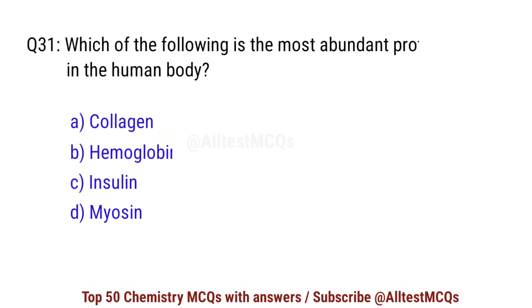Question number 31. Which of the following is the most abundant protein in the human body? Right option is A: collagen.